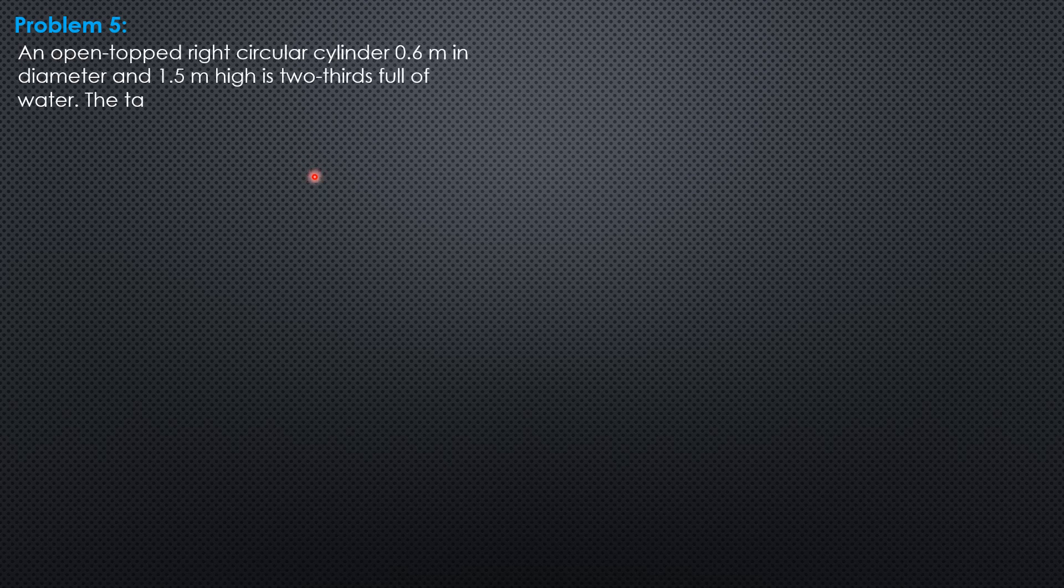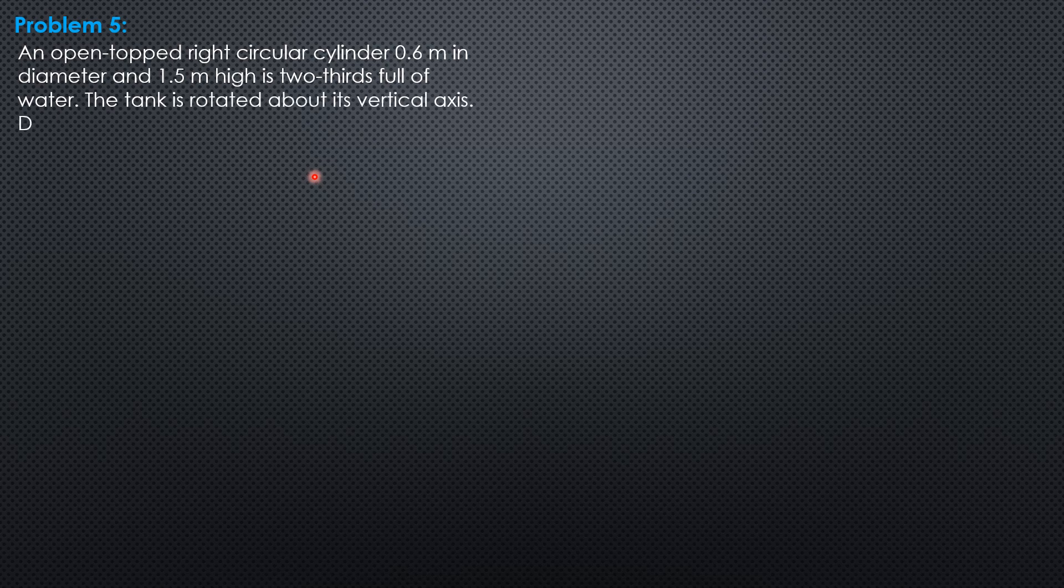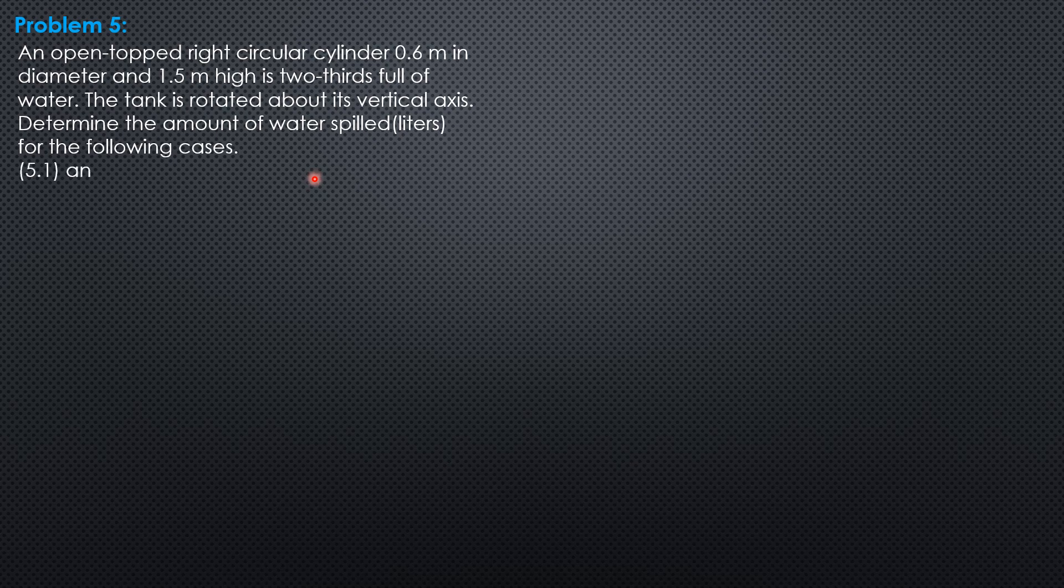Hi everyone, this is the solution to Example 5 on rotated vessels. Here's the problem: an open-topped right circular cylinder 0.6 meters in diameter and 1.5 meters high is two-thirds full of water. The tank is rotated about its vertical axis.